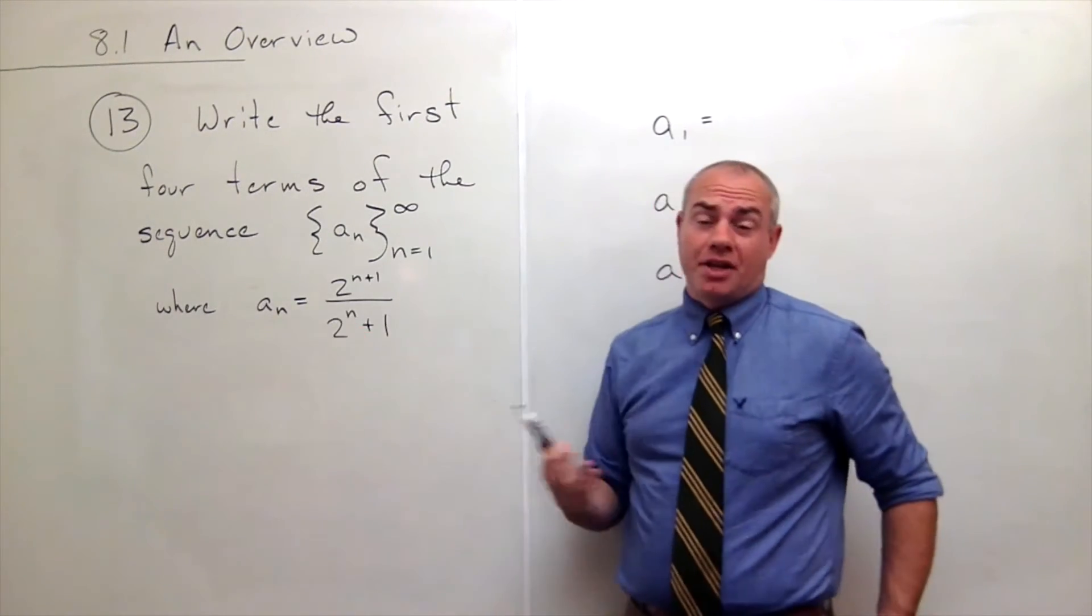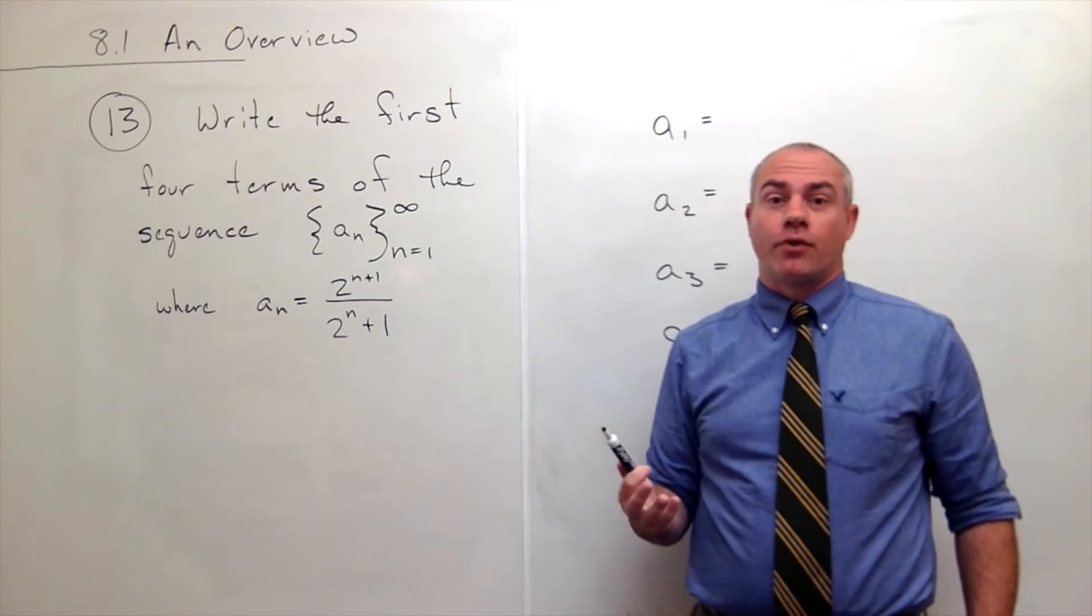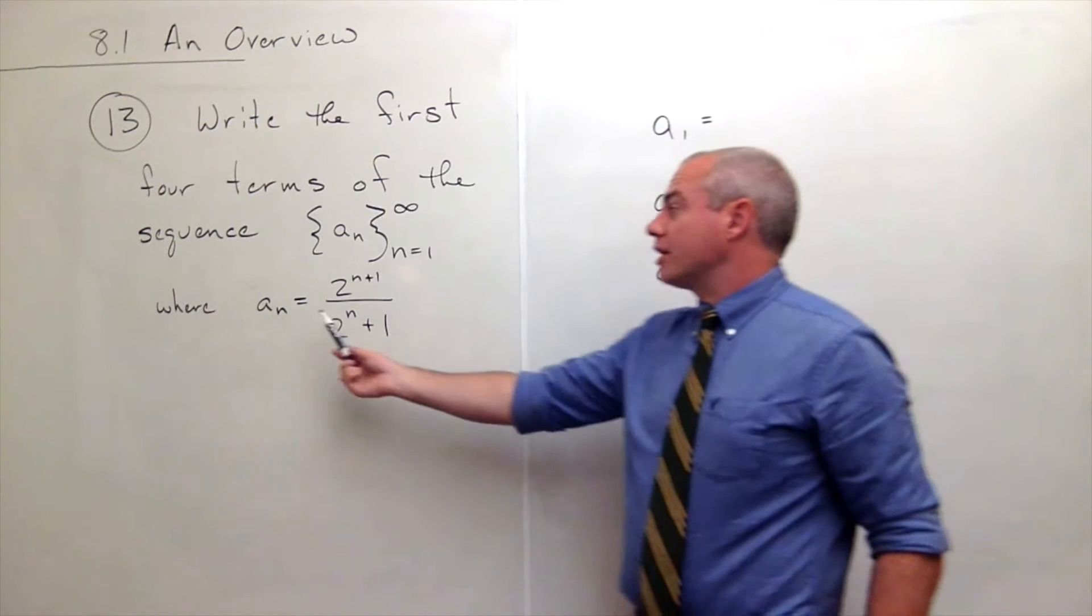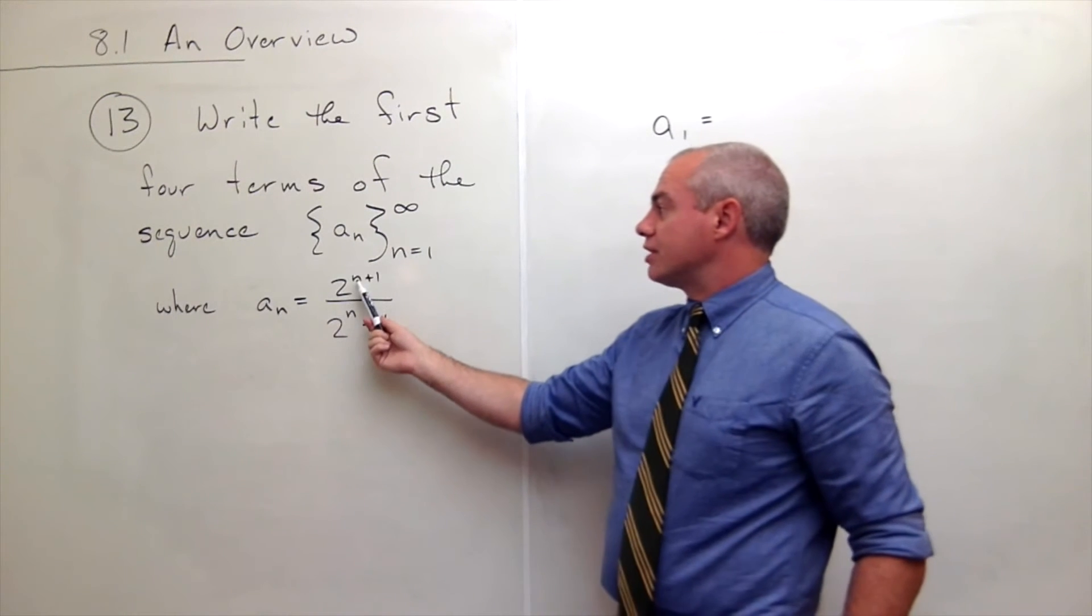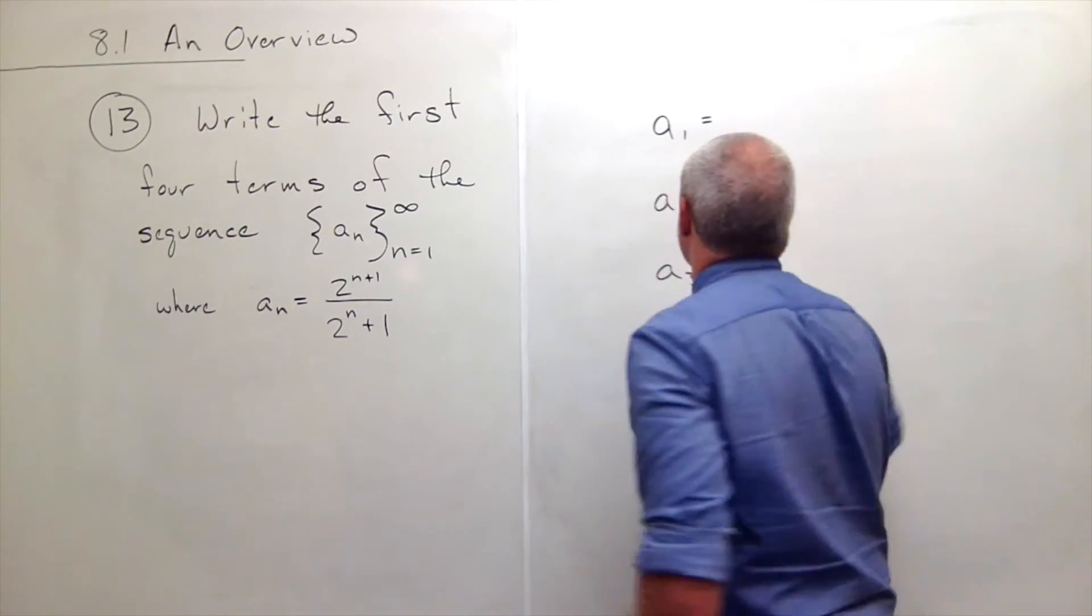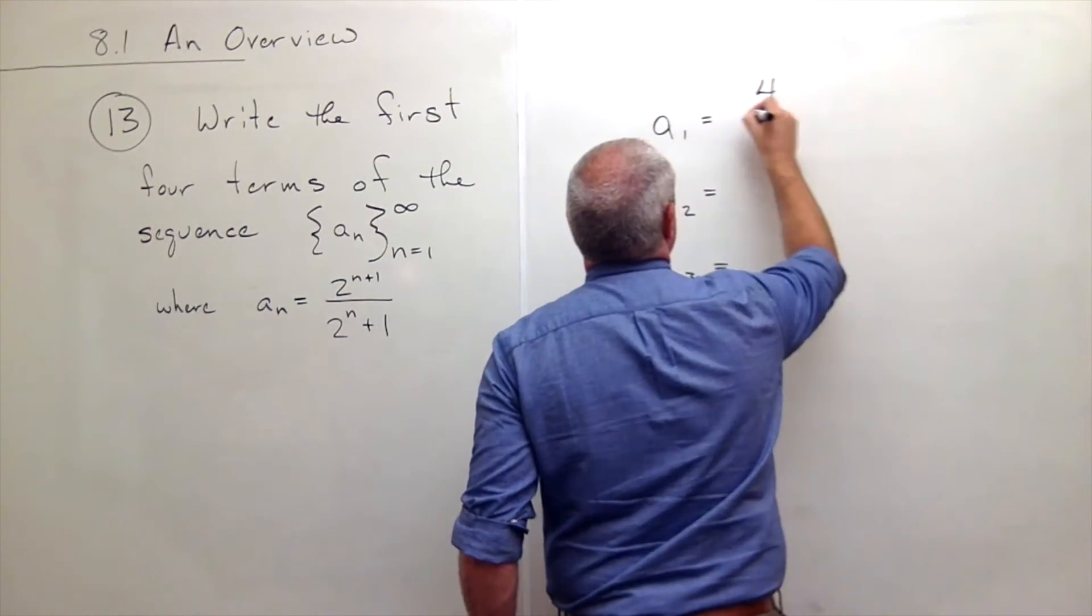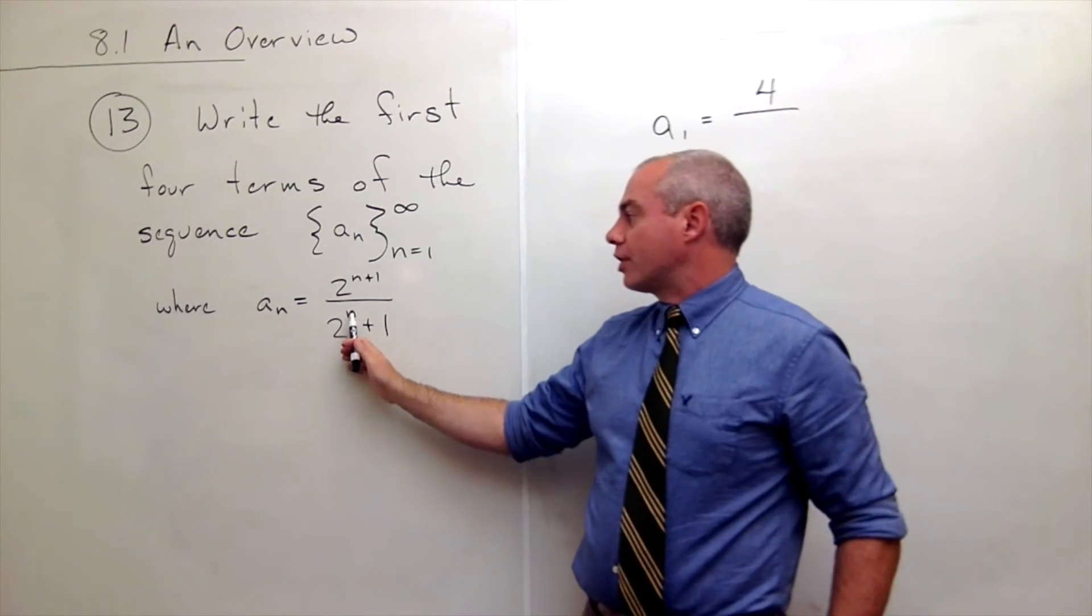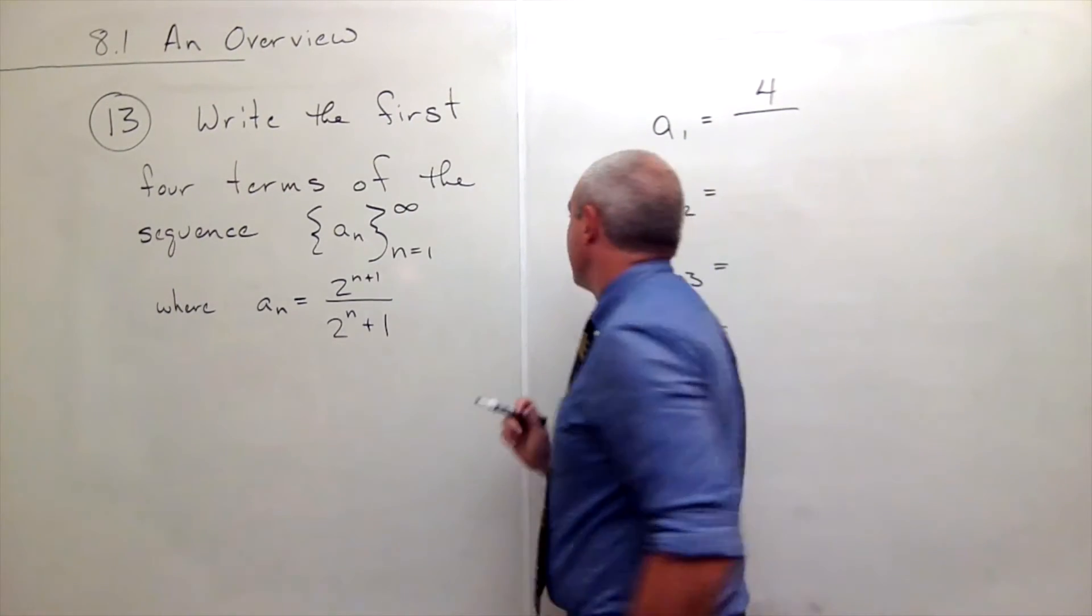Then we're just plugging things in. We've done this before, just like plugging things into a function. So if I plug in 1 here I get 2 to the 1 plus 1, or in other words 2 squared, and 2 squared I know is 4. Divided by, on the bottom if I plug in 1, I get 2 to the first which is 2, plus 1 is 3. So a sub 1 is 4 thirds.